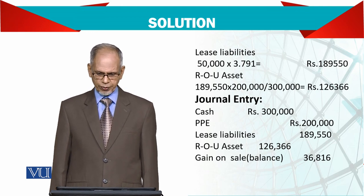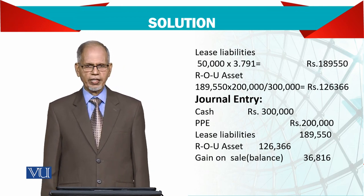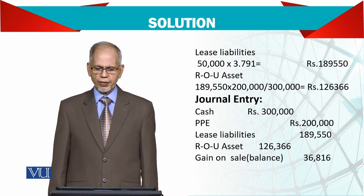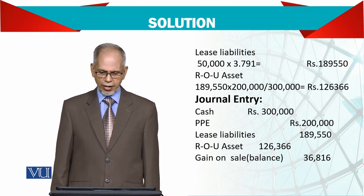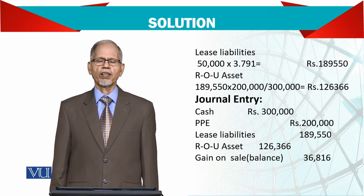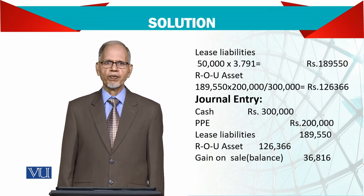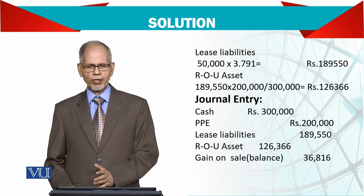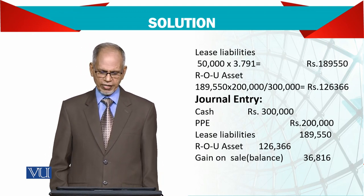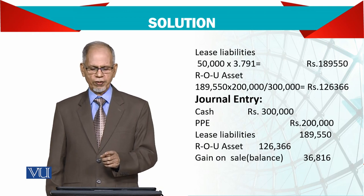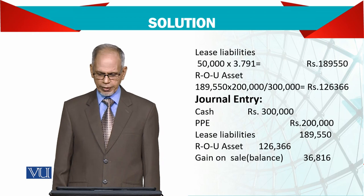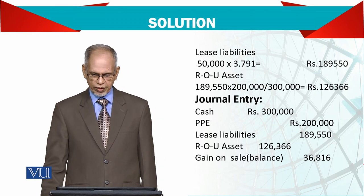For the right of use assets, there is a small adjustment. You take the lease liability and multiply it by the fraction of carrying value over fair value: 200,000 divided by 300,000, multiplied by 189,550.